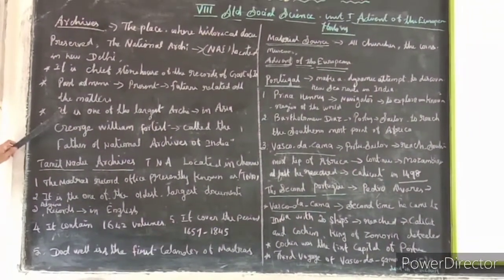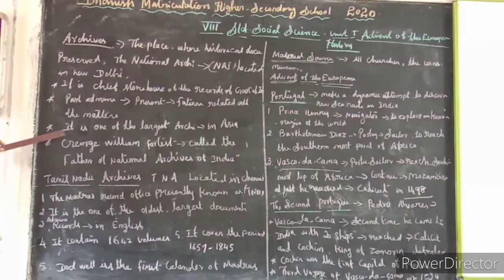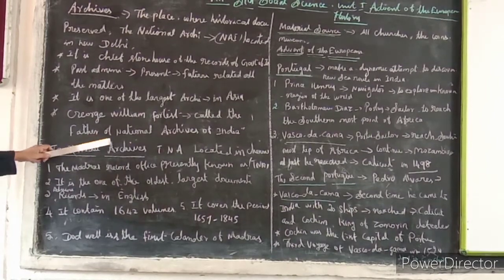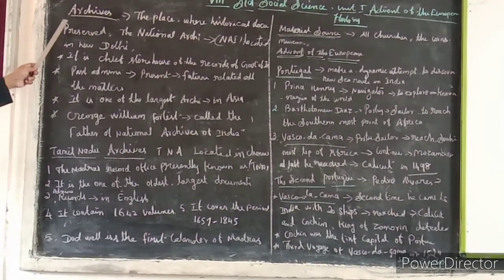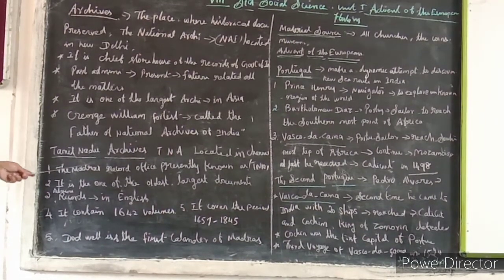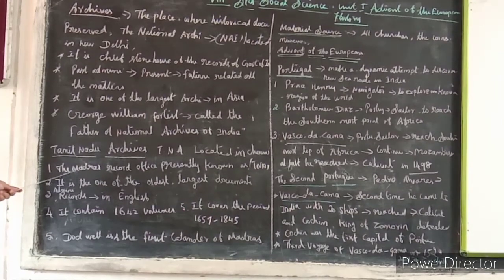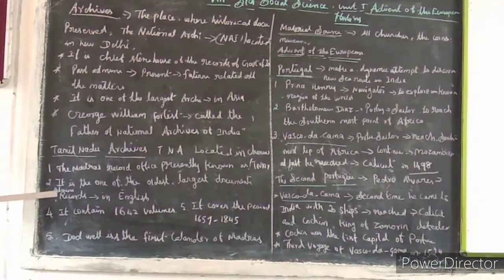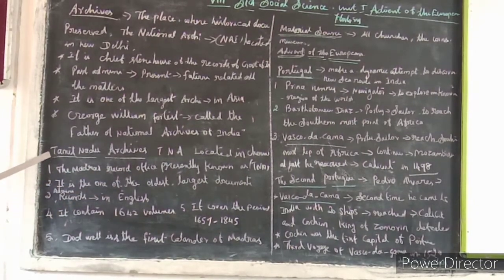The National Archive of India is one of the largest archives in Asia. George William Moore was called the Father of the National Archive of India. We get a lot of information about our government from the archive. This is also one of the written sources. Another archive is located in Chennai — it was formerly known as the Madras Record Archive and is presently known as the Tamil Nadu Archive. It is one of the oldest and largest document archives in India.